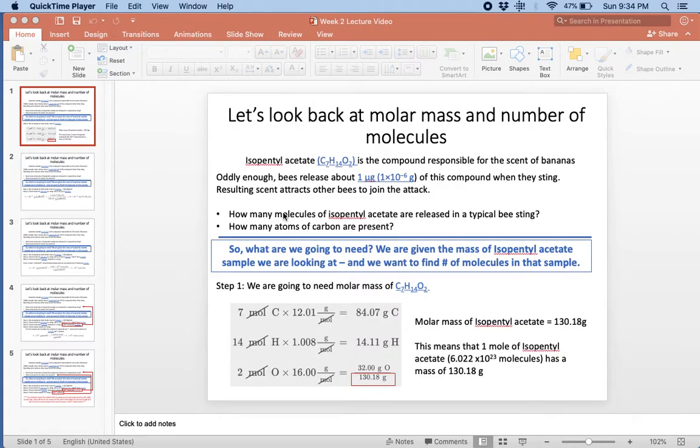What we want to do is find out how many molecules of isopentyl acetate are released in the average bee sting, and how many atoms of carbon are present. We're arbitrarily choosing carbon; we could have chosen hydrogen or oxygen, the same concepts would still apply. The first thing we need to think about is what's being asked and what we're going to need to do. We were given the formula of isopentyl acetate, so from that we can figure out a molar mass.